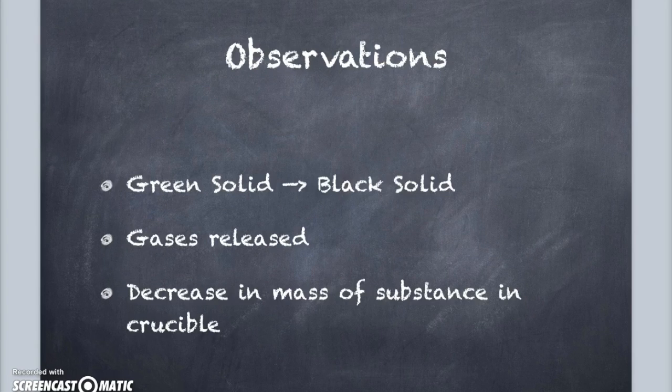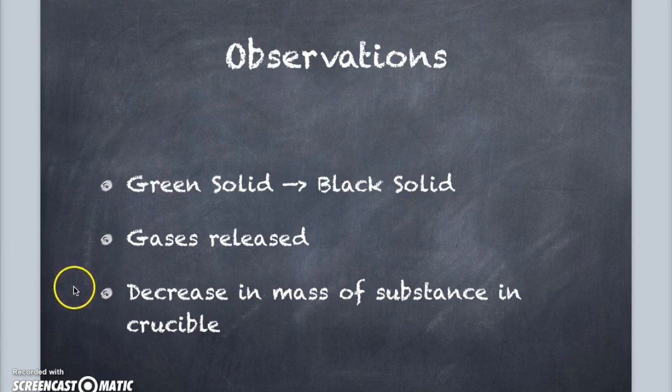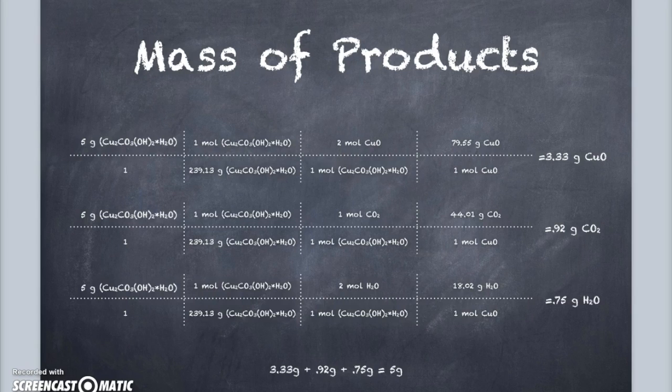Apart from the color change and observed gas release, as described earlier, there was also a decrease of mass in the crucible. Since we know the end mass of the copper oxide and the starting mass of the hydrate, the amount of gases released can be calculated.